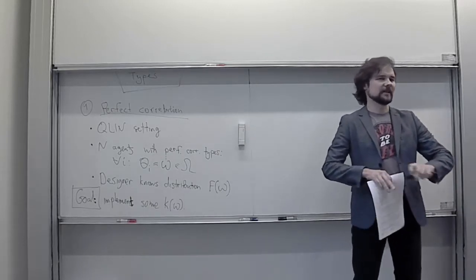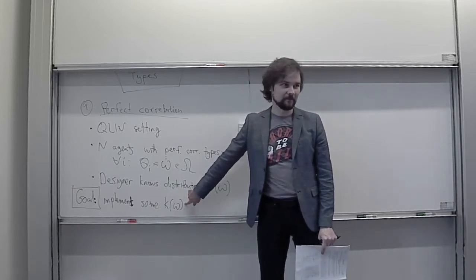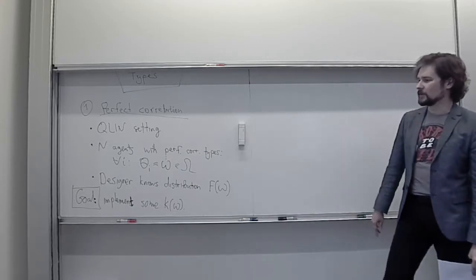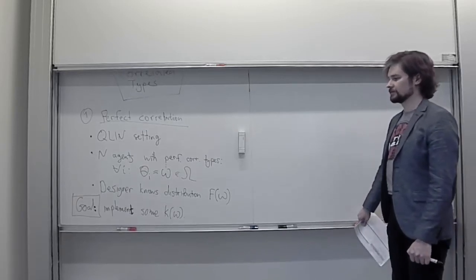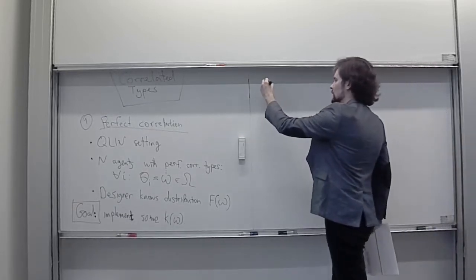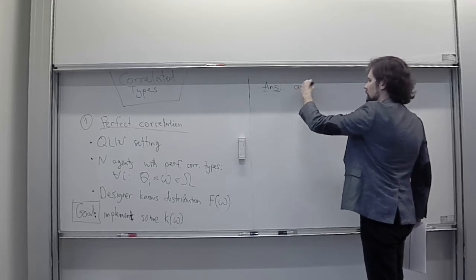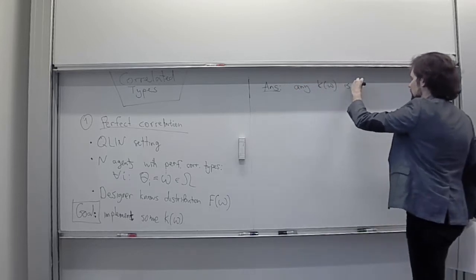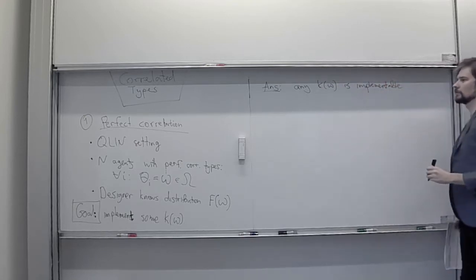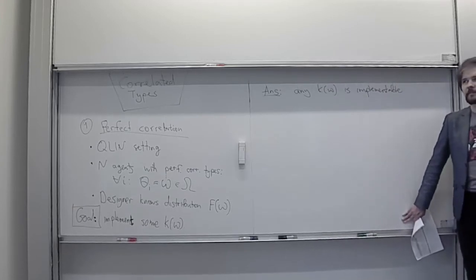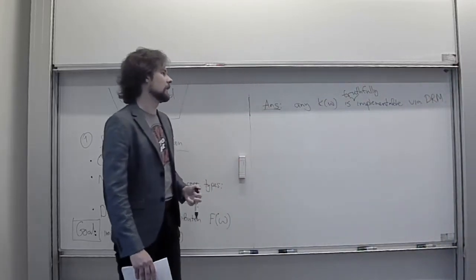I'll spoil it by saying that whatever k is, we can implement it. There is a way in which with this perfect correlation we can always find a transfer rule that implements k of omega. Any k of omega is implementable — truthfully implementable in a direct revelation mechanism. As usual, we only really need to look at direct revelation mechanisms because the revelation principle does not break down yet.